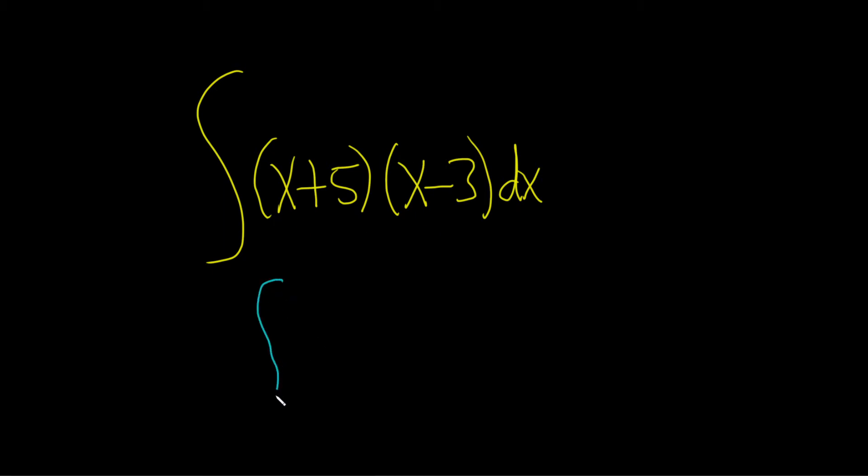We write the integral sign again, and we take the x and multiply it by each of these. So x times x is x², and x times -3 is -3x.